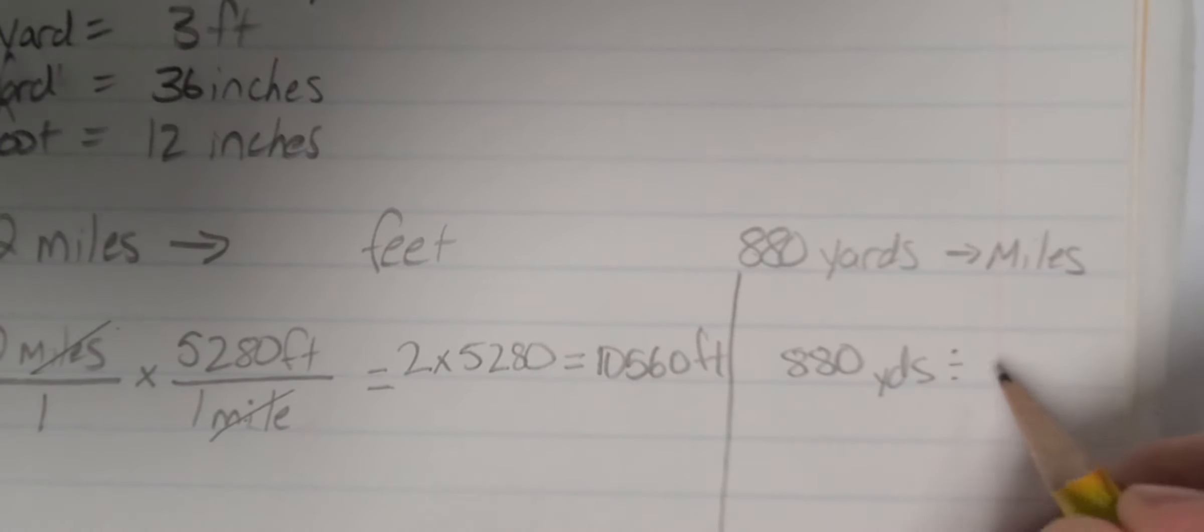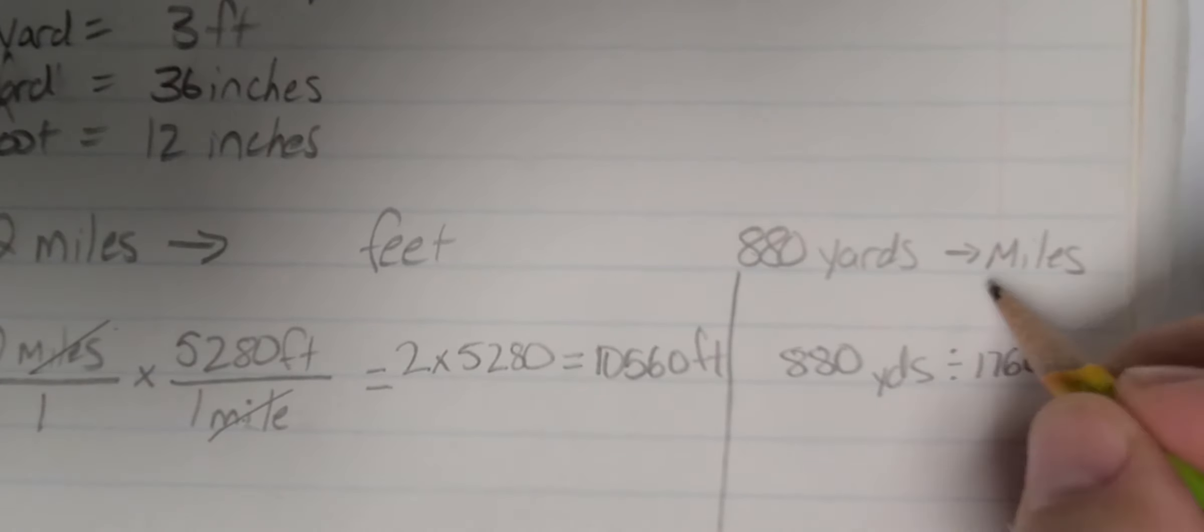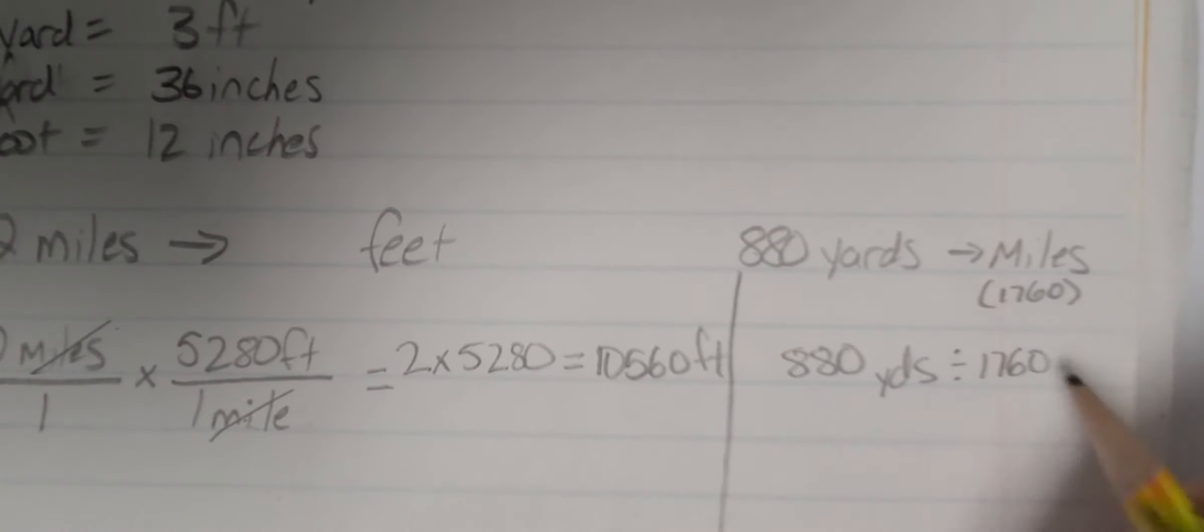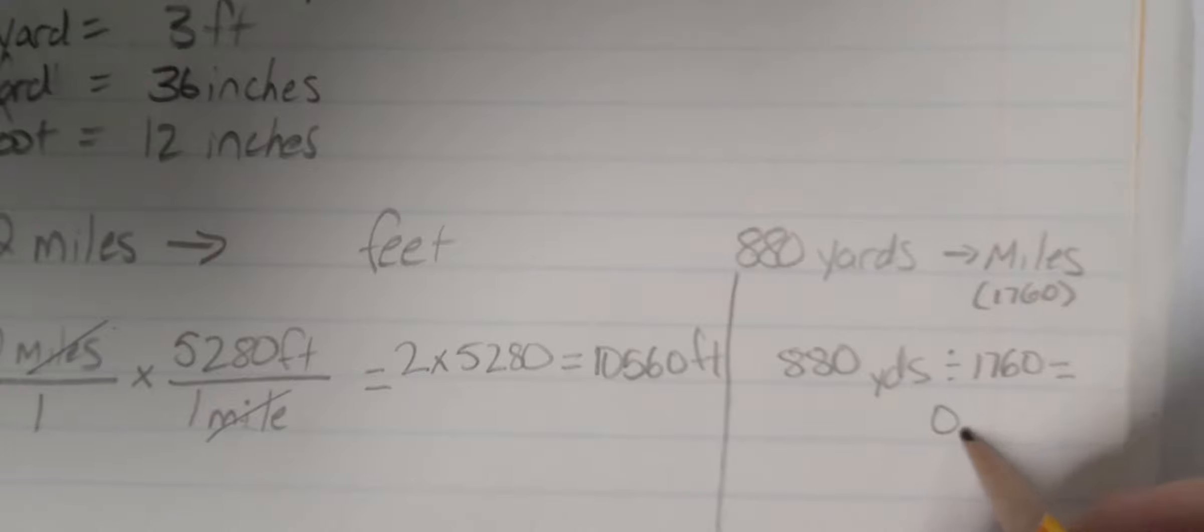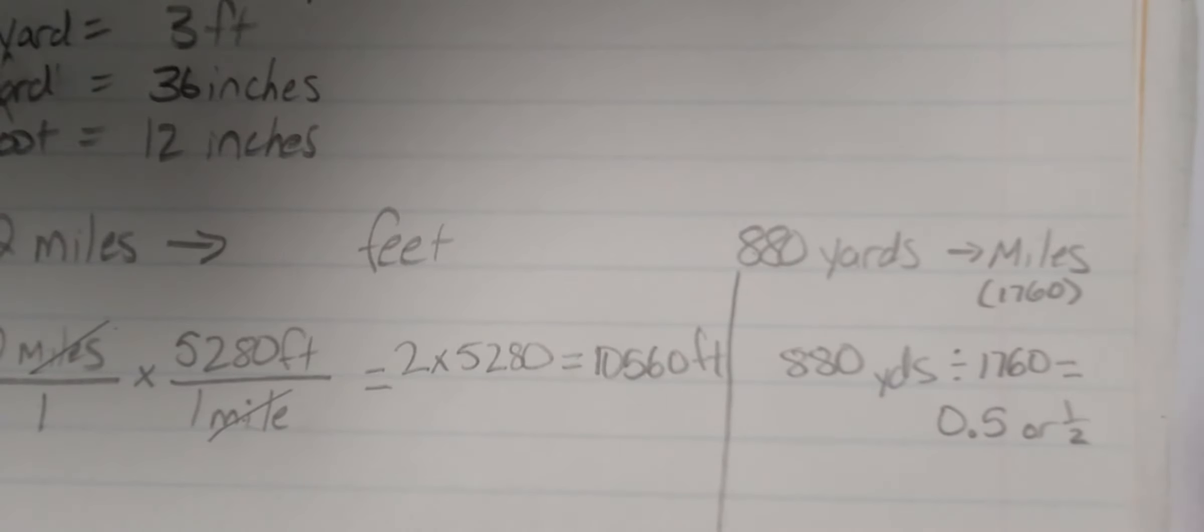I'm going to divide this by 1,760, because there's 1,760 yards in a mile. And this gets me 0.5 or 1.5. So 880 yards is 1.5 a mile.